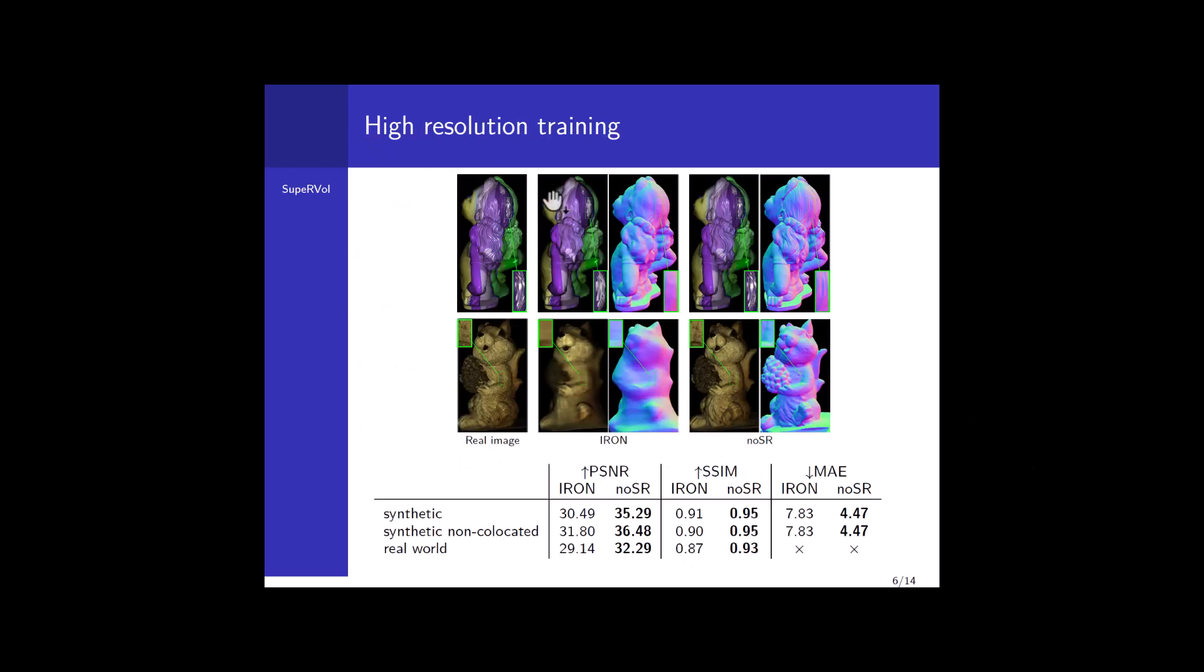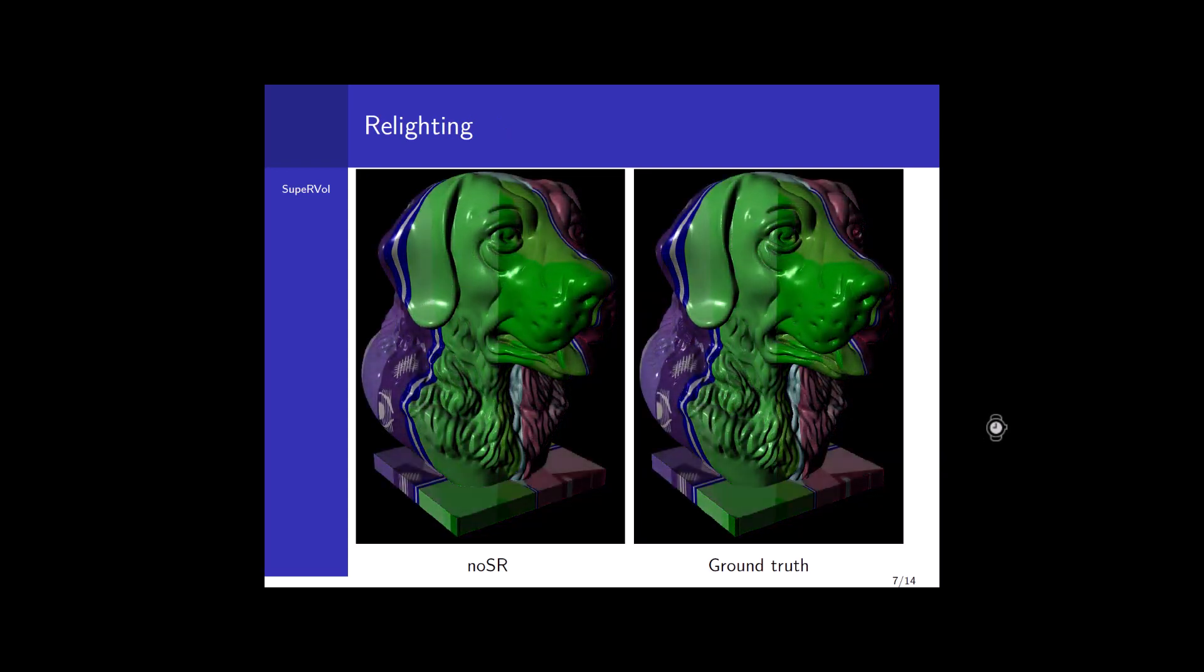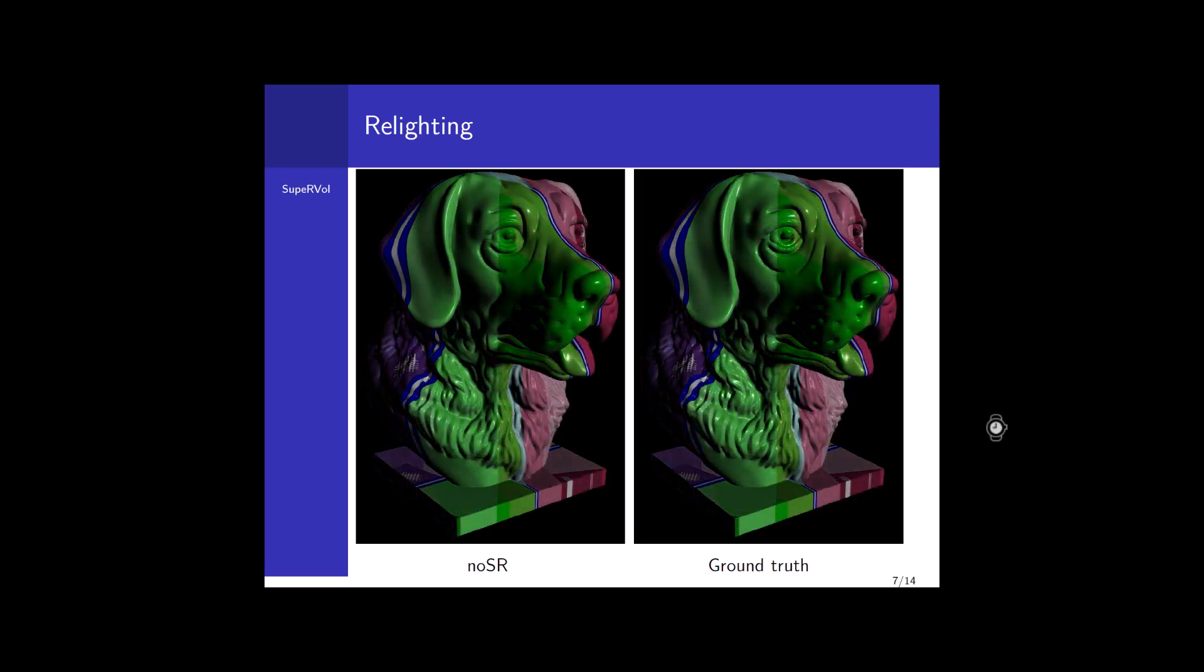First, for the high-resolution training, here we have some qualitative and quantitative results. We have the real image in the first column, then the result of iron, which is a state-of-the-art inverse rendering framework. We can see that our approach yields much more detailed geometry and rendering as well. This basically confirms that the volume rendering has much better convergence compared to the surface rendering used in iron. This is also further confirmed quantitatively, as can be seen here. We have also validated our framework on non-collocated lighting, which is further confirmed with this video where the specularities and shadows are faithfully represented.